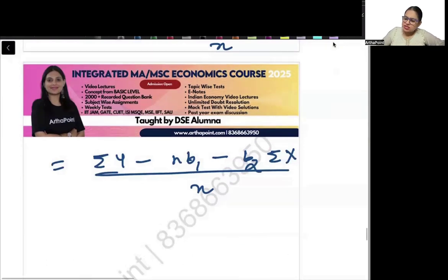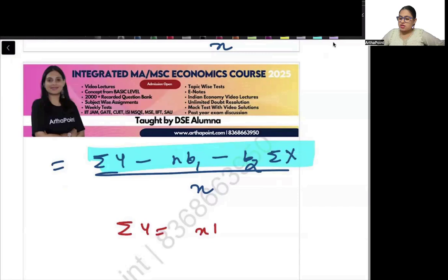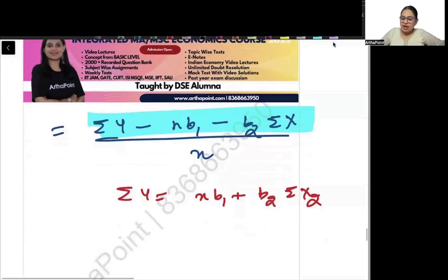And isn't this the first normal equation? The first normal equation says summation Y is equal to NB1 plus B2 summation X. This is my first normal equation. You can refer to this lecture, it is available on YouTube also.